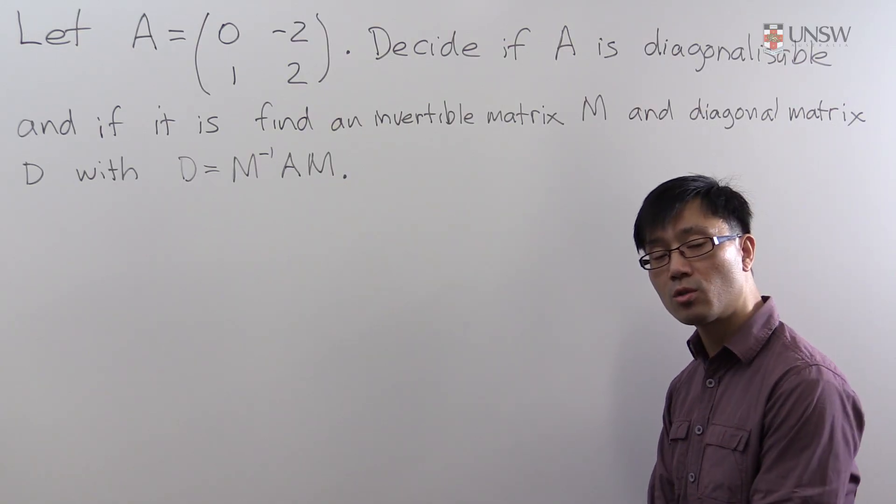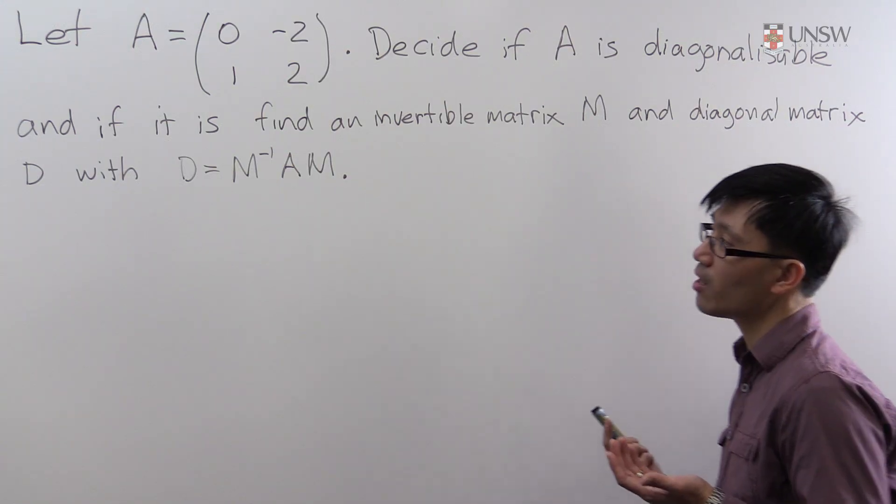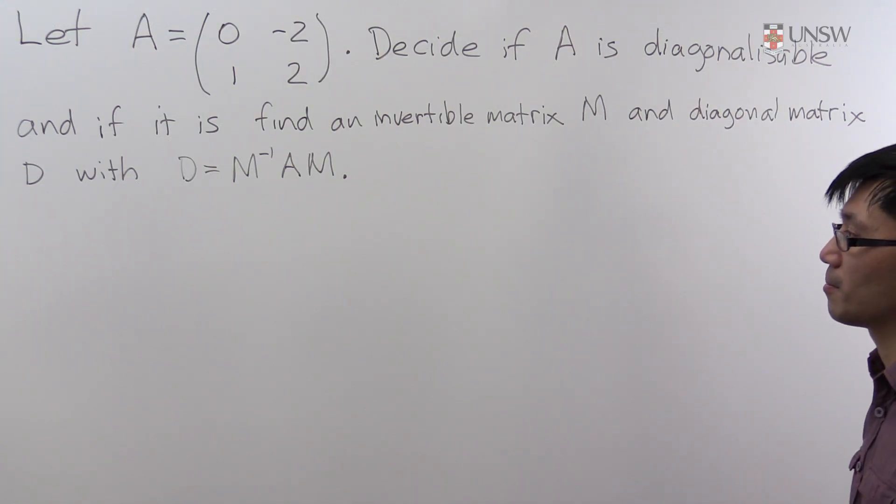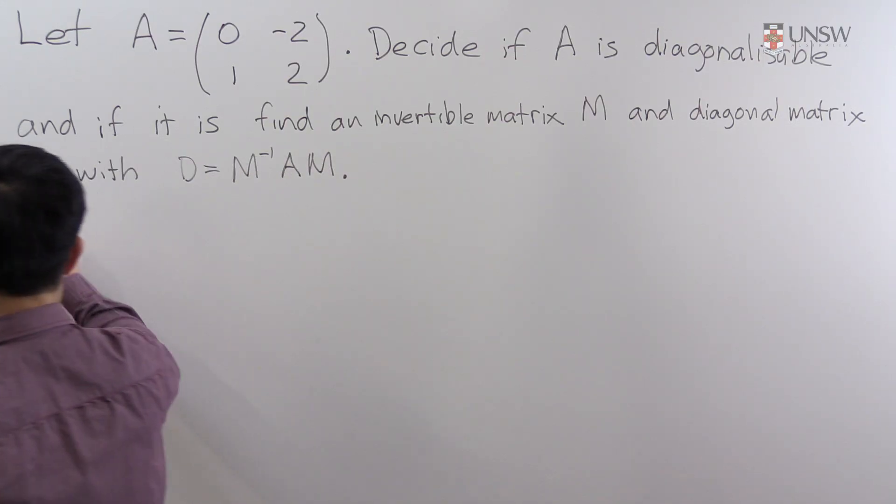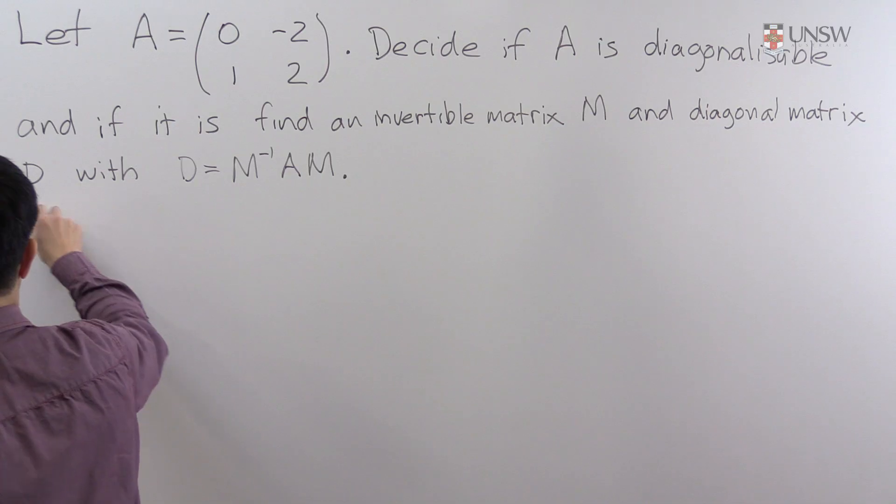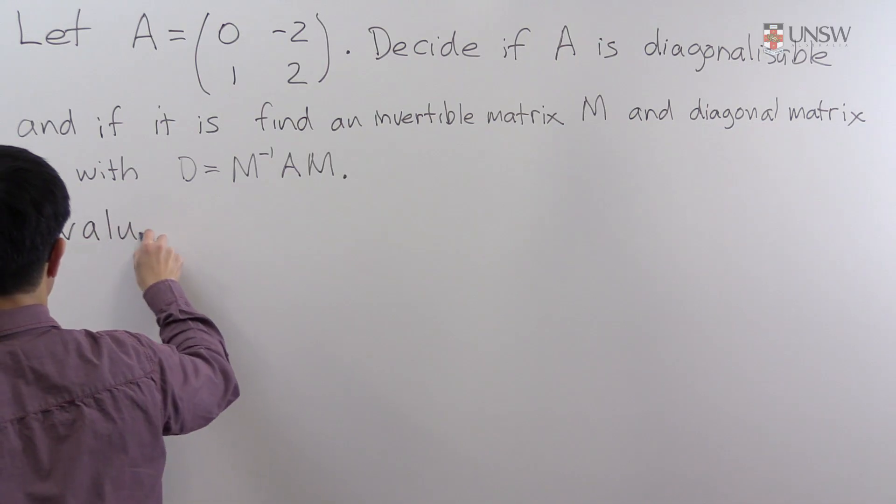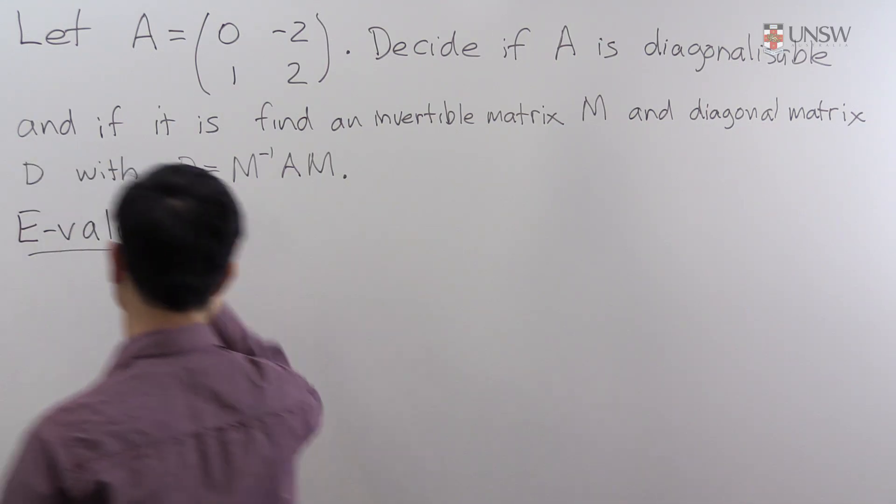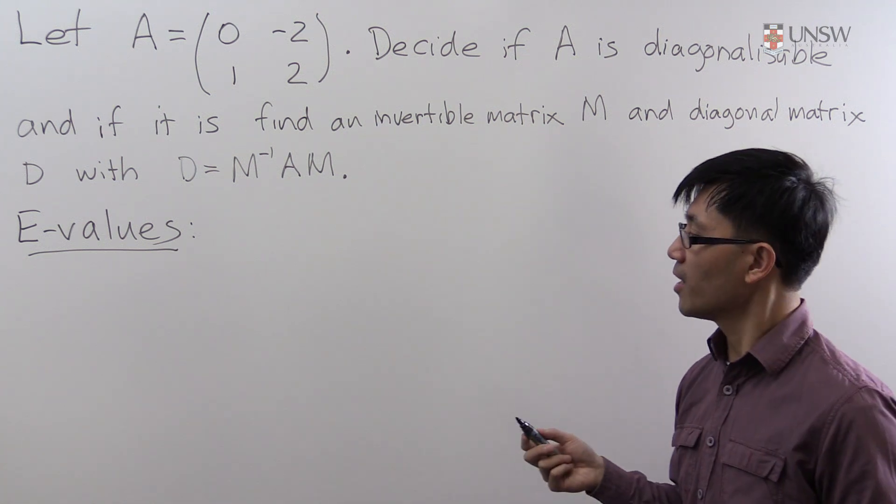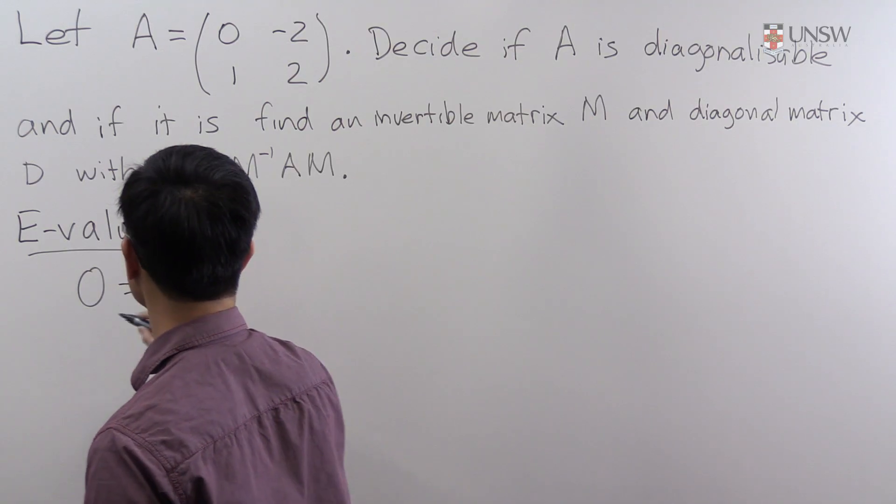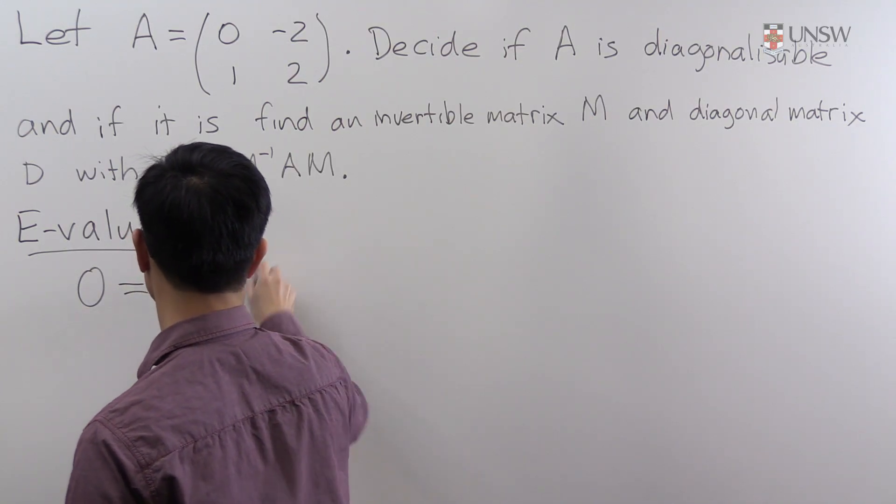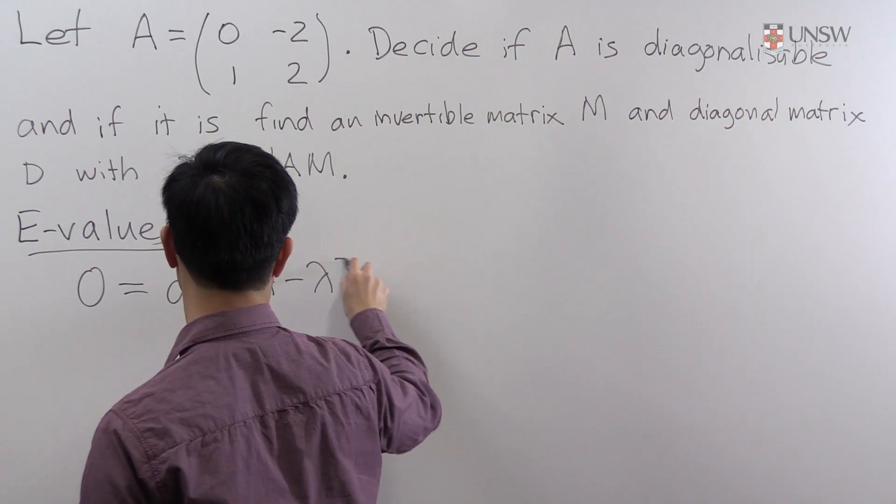So to do this question we have to first find the eigenvalues and the eigenvectors for A, and of those it's the eigenvalues that we need to find first. So let's look at the eigenvalues. To find these we need to look at the roots of the characteristic polynomial.